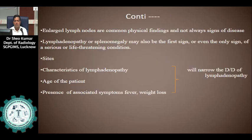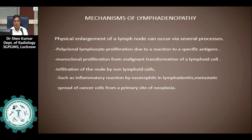Large lymph nodes are a common physical finding and not always signs of disease. Lymphadenopathy or splenomegaly may also be the first sign or even the only sign of serious or life-threatening conditions. There are various points by which you can narrow down the differential diagnosis of lymphadenopathy, such as the site where the lymph nodes are involved, the characteristics of lymph nodes, the age of the patient whether adult or child, and the presence of associated symptoms like fever and weight loss.